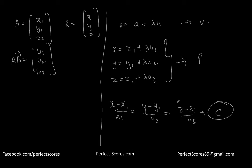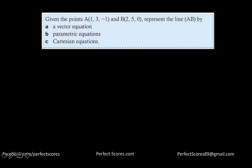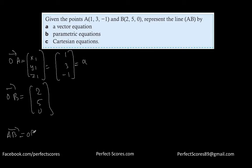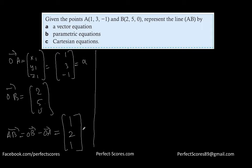Let's do a question. Let's say point A, which gives us (x1, y1, z1), equals (1, 3, −1), and point B equals (2, 5, 0). This gives us vector OA as small a. Vector AB equals OB minus OA, which is (2−1, 5−3, 0−(−1)) equals (1, 2, 1). So that's vector AB, which is our (u1, u2, u3).